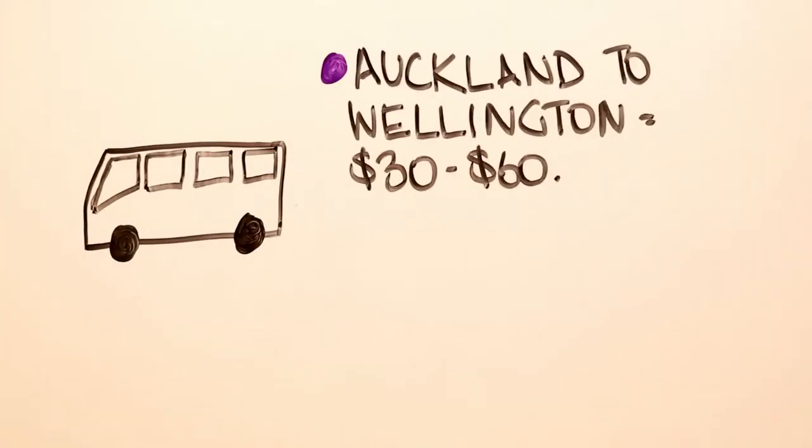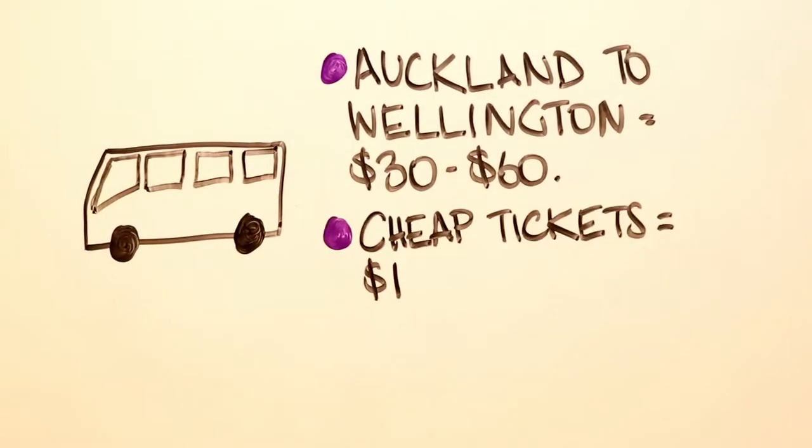You can also bus. Auckland to Wellington, for example, can be from $30 to $60 if you book in advance. And if you book really early, most buses have one seat that is $1, but people buy them very quickly.